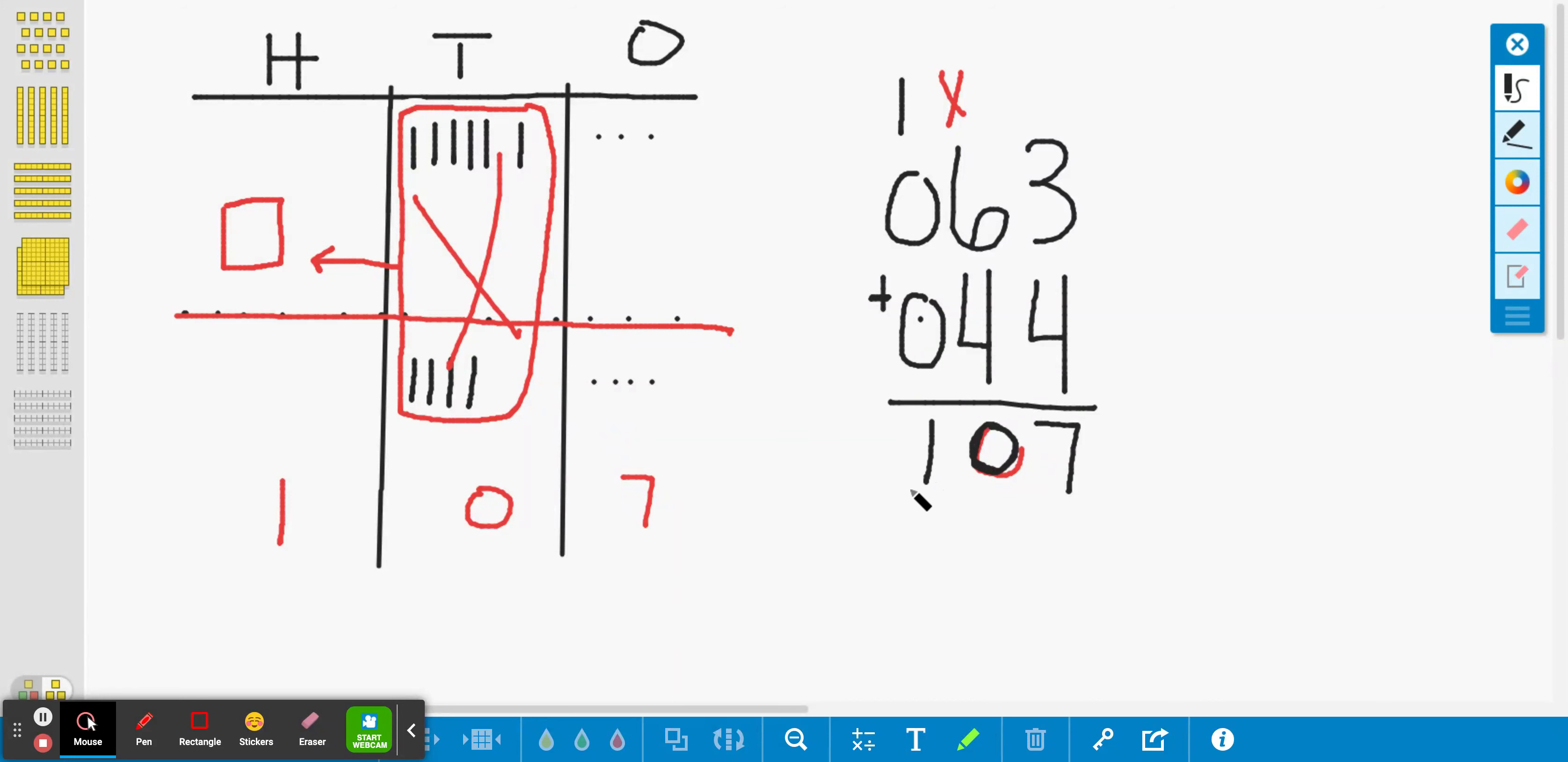So what we saw is that we saw a hundred seven, just like we have here in our model. We added our ones. We didn't have to regroup because there wasn't 10 ones yet. It takes 10 ones to make a 10. So we just wrote our seven. Then we counted our tens and we had six tens and four tens. And I know six and four make 10.